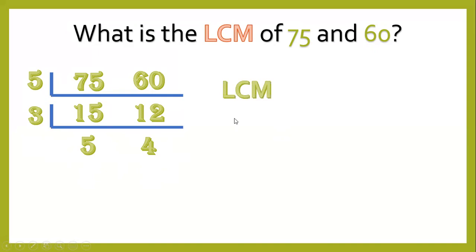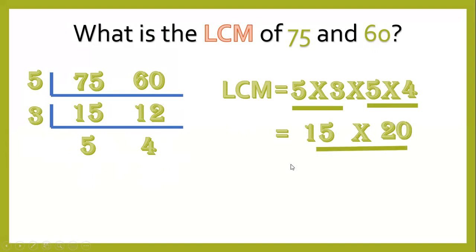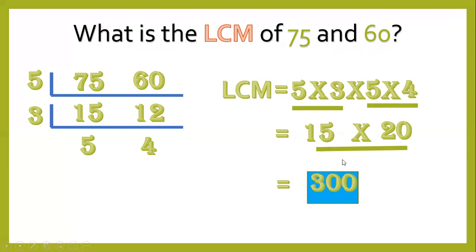So LCM equals 5 times 3 times 5 times 4. 5 times 3 equals 15; 5 times 4 equals 20; 15 times 20 equals 300. So 300 is the final answer.